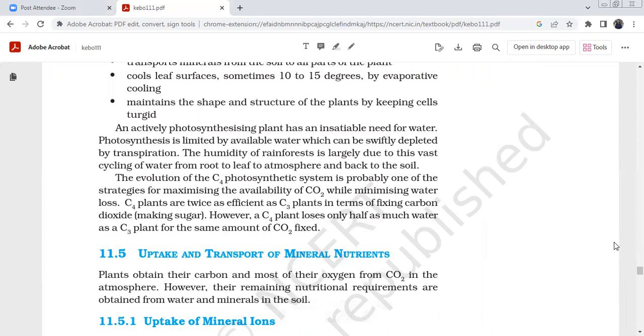An actively photosynthesizing plant has an insatiable need for water. Photosynthesis is limited by available water, which can be quickly depleted by transpiration. The humidity of rainforest is largely due to vast cycling of water from root to leaf to atmosphere and back to soil.